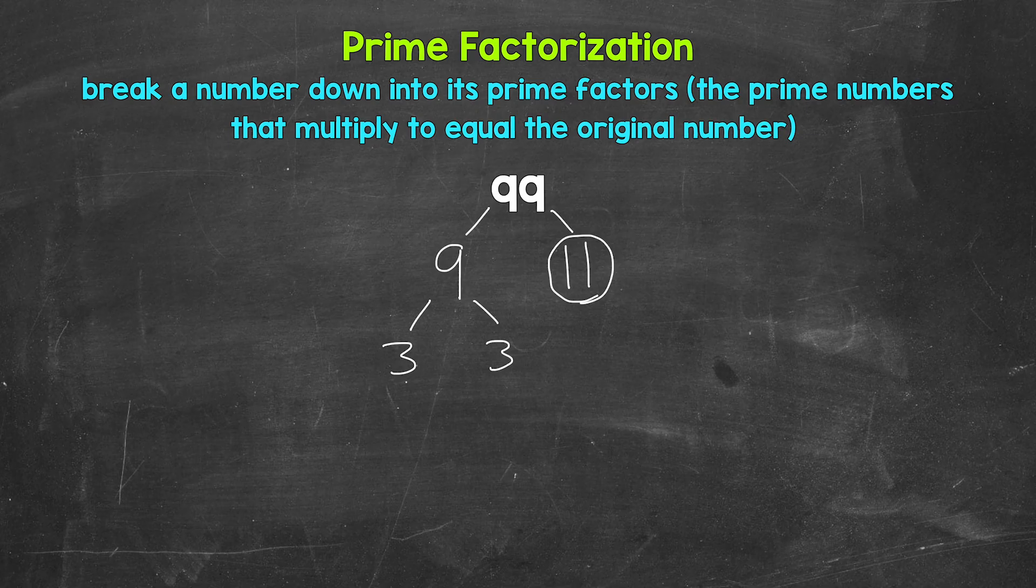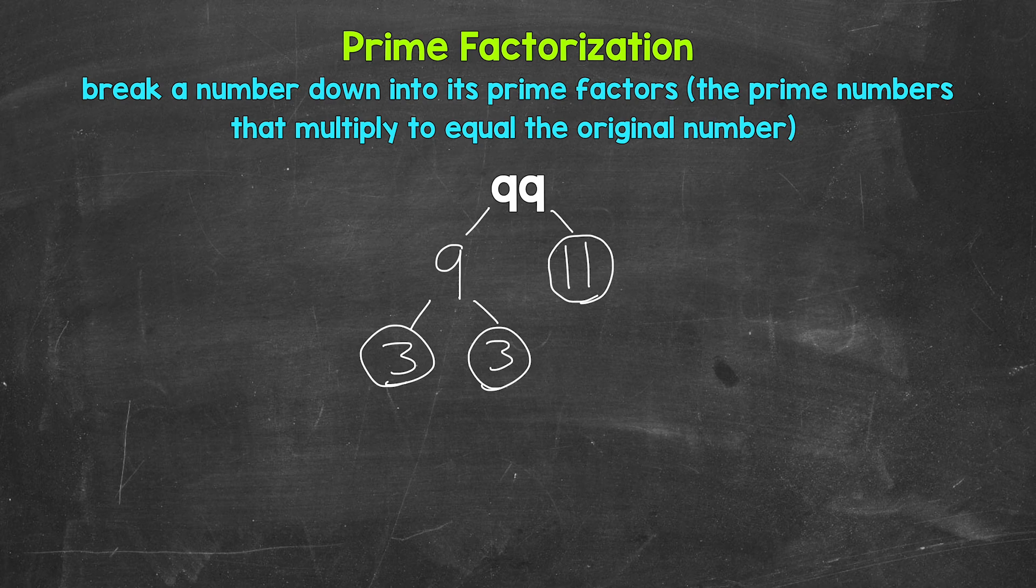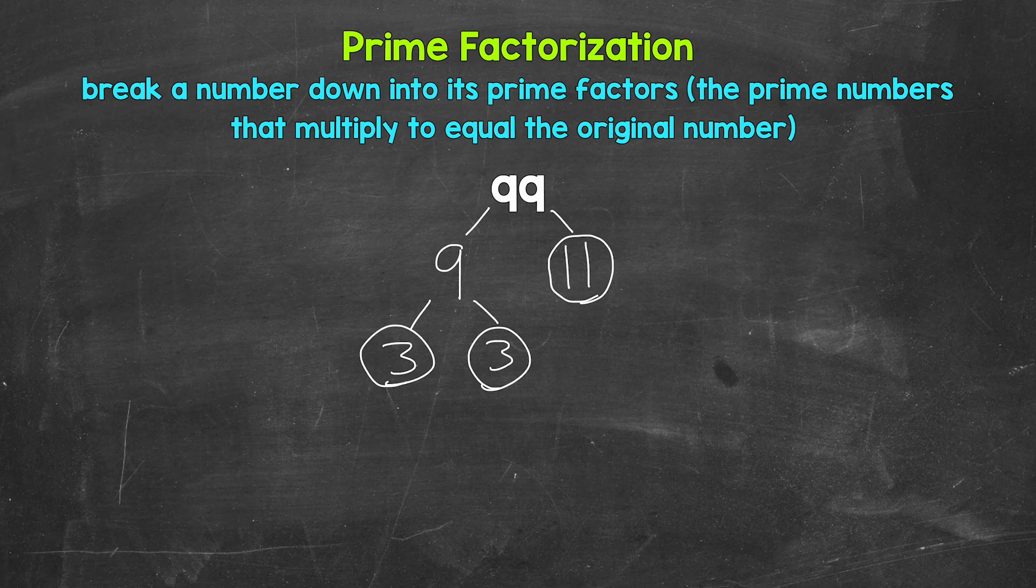Now 3 is a prime number. So we are done here and here. And that's the prime factorization of 99. We can't break anything else down any further.